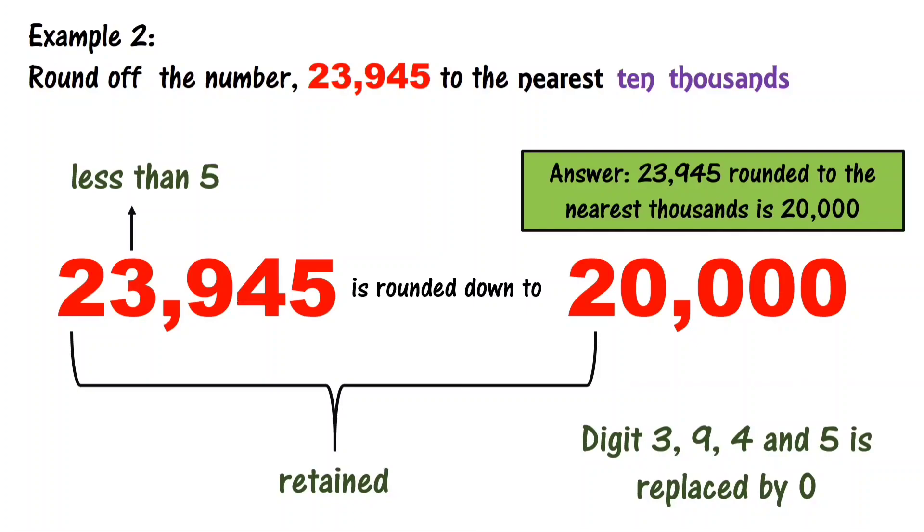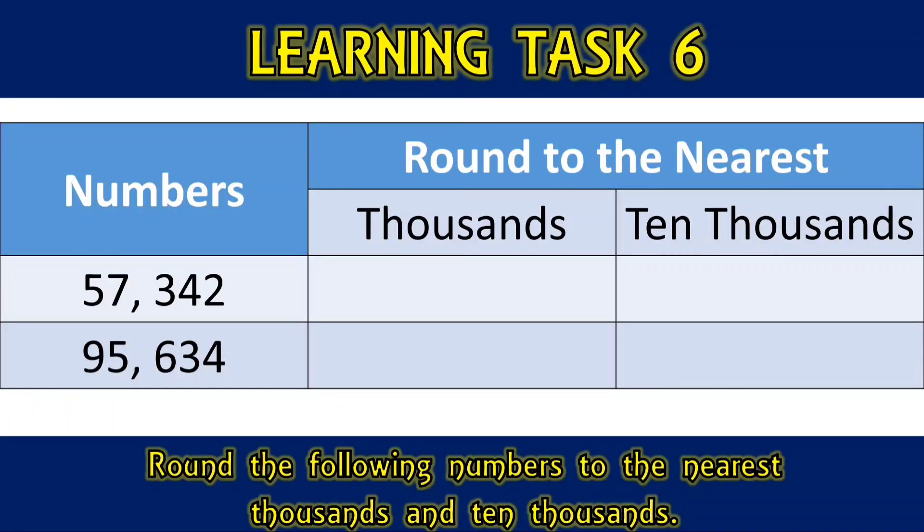Round the following numbers to the nearest thousand and ten thousand: 57,342 and 95,634.